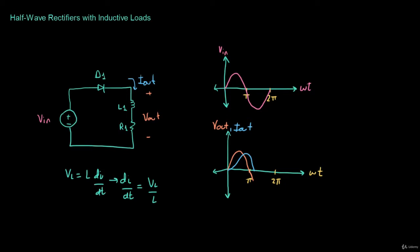From zero to pi the output is positive, it's going to go negative from pi until the current goes to zero, and then it's going to come back to zero. This of course repeats — again positive, going slightly into negative, then back to zero. And likewise the output current is going to repeat.